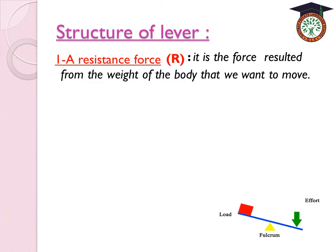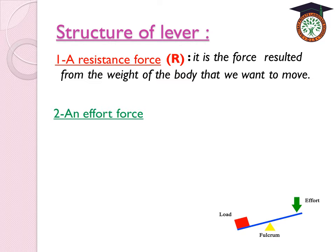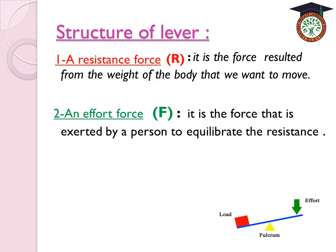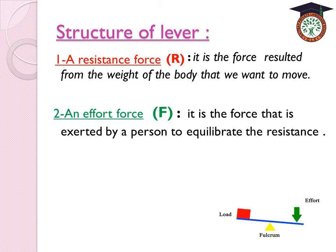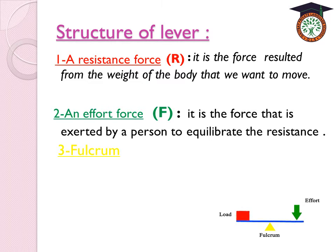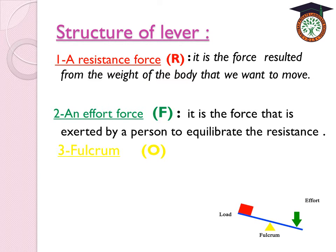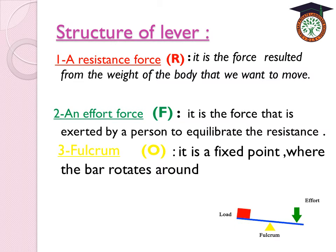The second part, shown in green, is the effort force, which takes the symbol F. The effort force is the force exerted by a person to equilibrate the resistance force. The third part, shown in yellow, is the fulcrum, which takes the symbol O. The fulcrum is the fixed point where the bar rotates around.